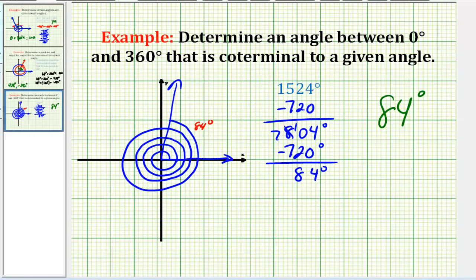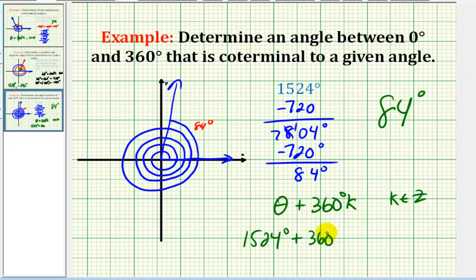And we know from a previous video, in the most general case, any angle that's coterminal to, let's say theta, would be theta plus 360 degrees times k, where k is some integer. So what we could do is just take our angle, 1524 degrees, and then add multiples of 360 degrees times k, where k is negative, to obtain an angle that's between zero and 360 degrees.